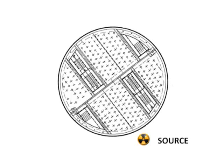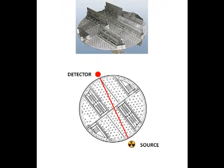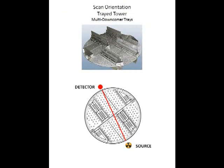In this case, the source and detector were positioned so that a gamma scan path was possible in between the downcomers. The tower scan was conducted to determine possible causes for an increased pressure drop across the tower, which forced operations to run at reduced rates.